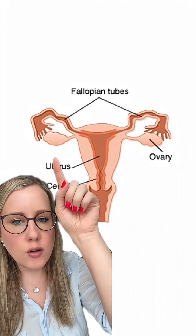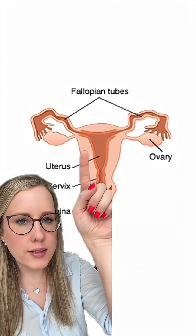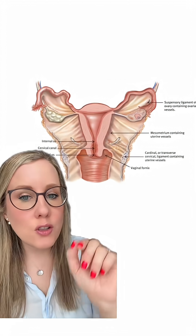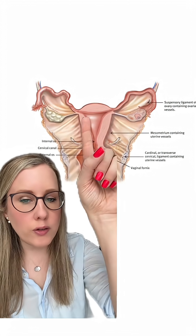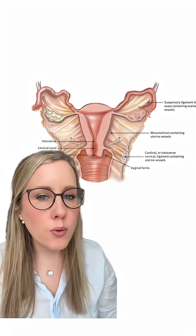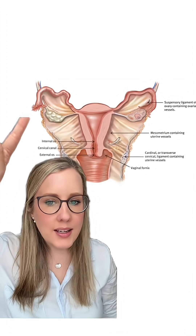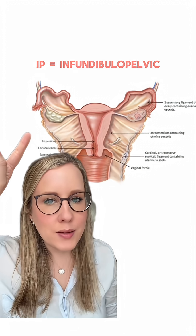We're used to seeing that your ovary is attached to your uterus. While this is true — you do have a ligament that connects the ovary to the uterus — the much more important ligament is this one right here. We call this the IP ligament.